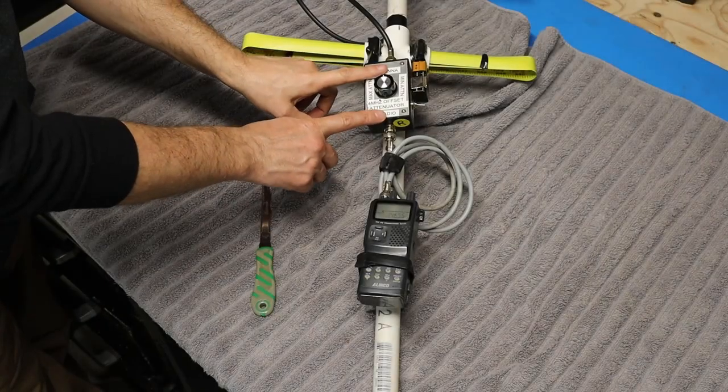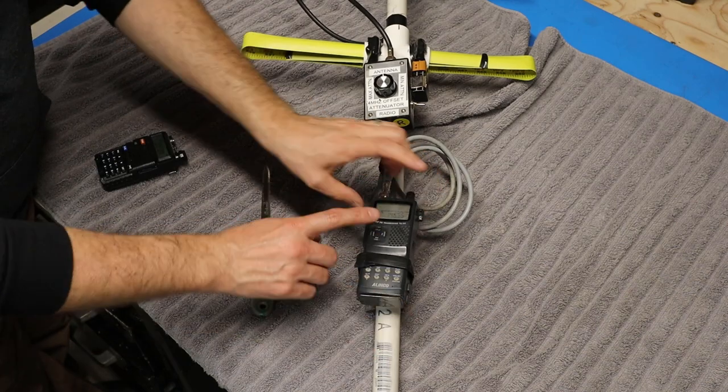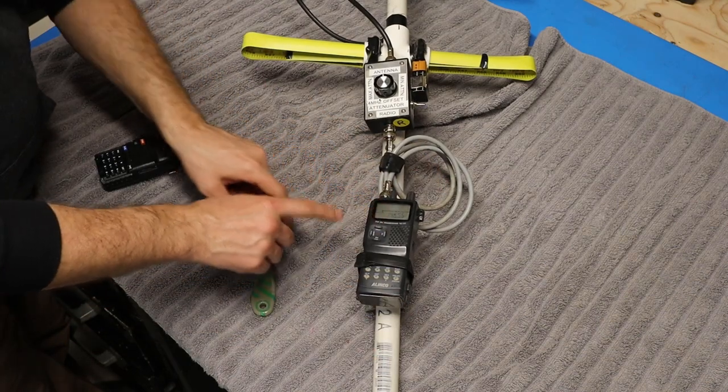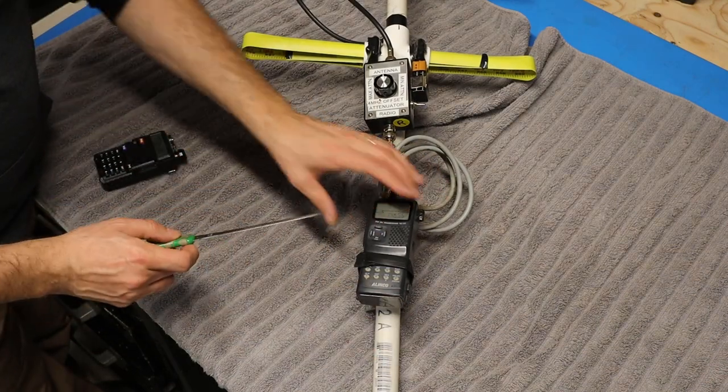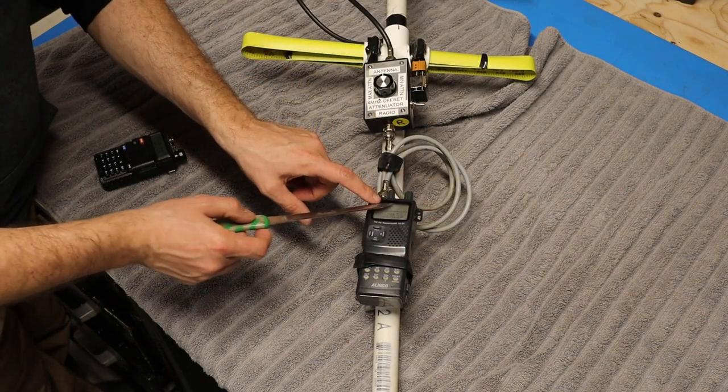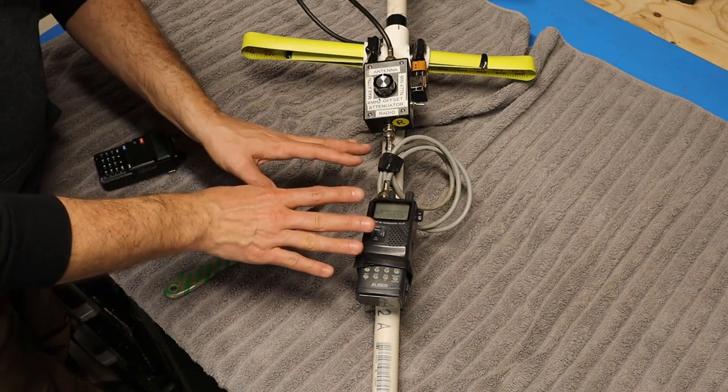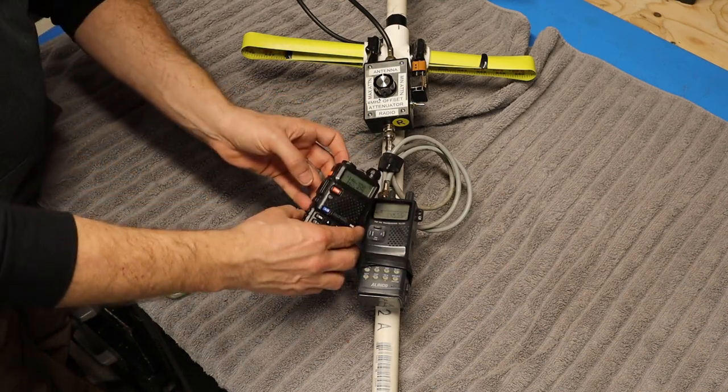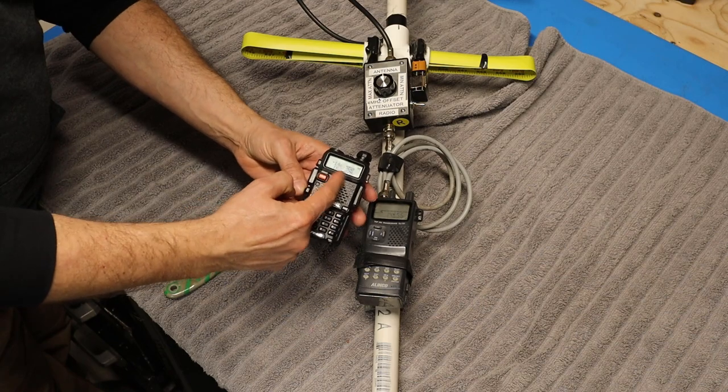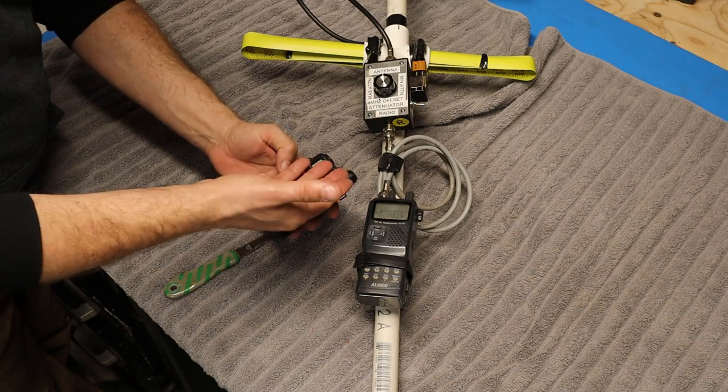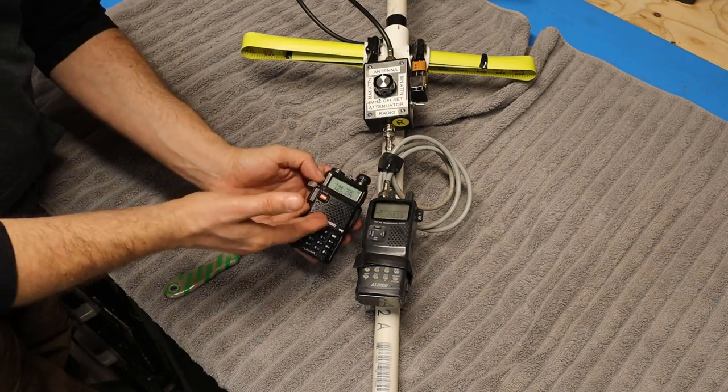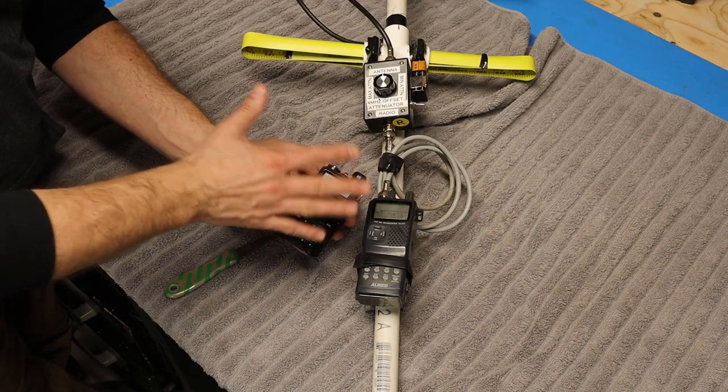So connected up to the attenuator, I've got my trusty old Olinko DJ1G HT. I like this HT for fox hunting because as you'll see in a minute up here, it's got a nice graduated signal meter that will give us good indication of signal strength. Radios like these Baofangs don't really have any graduations in their signal meter. They kind of either turn on or off, so they're not really useful as fox hunting receivers.